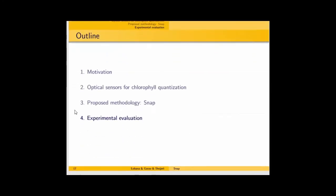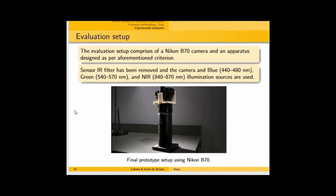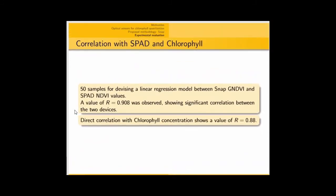So, we can now move on towards an experimental evaluation of this. The evaluation set-up would involve a Nikon B70 camera and an apparatus, as designed by the aforementioned criteria. So, we modeled a linear regression model for the rice samples, 50 rice samples, and correlated them with SPADs and DVR values.